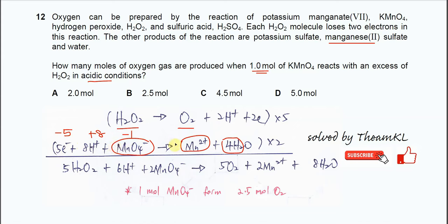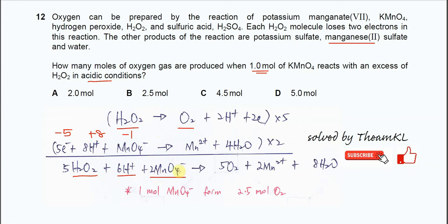Once you have the two half-equations, you need to combine them. The first half-equation is multiplied by five and the second by two, so that the number of electrons is equal and can be eliminated. Combining left-to-left and right-to-right, you get: 5H2O2 + 6H⁺ + 2MnO4⁻ → 5O2 + 2Mn²⁺ + 8H2O. This is the overall equation for the reaction.